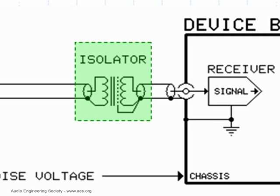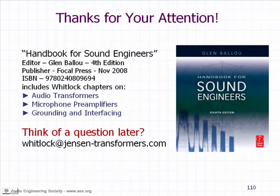There is essentially an electrical barrier inside a transformer that prevents any current from flowing from the primary to secondary. Thank you all very much — you've been a very nice audience.